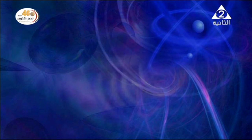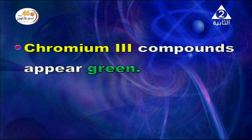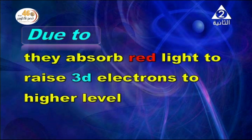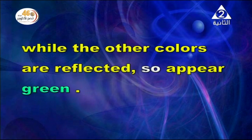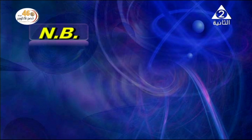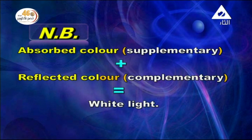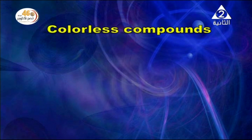Give reason: Chromium(3) compounds appear green. The reason is that they absorb red light to raise the 3d electrons to a higher level, while the other colors are reflected, giving a green appearance. The absorbed color is the supplementary color, and the reflected color is the complementary color; together they make white light.